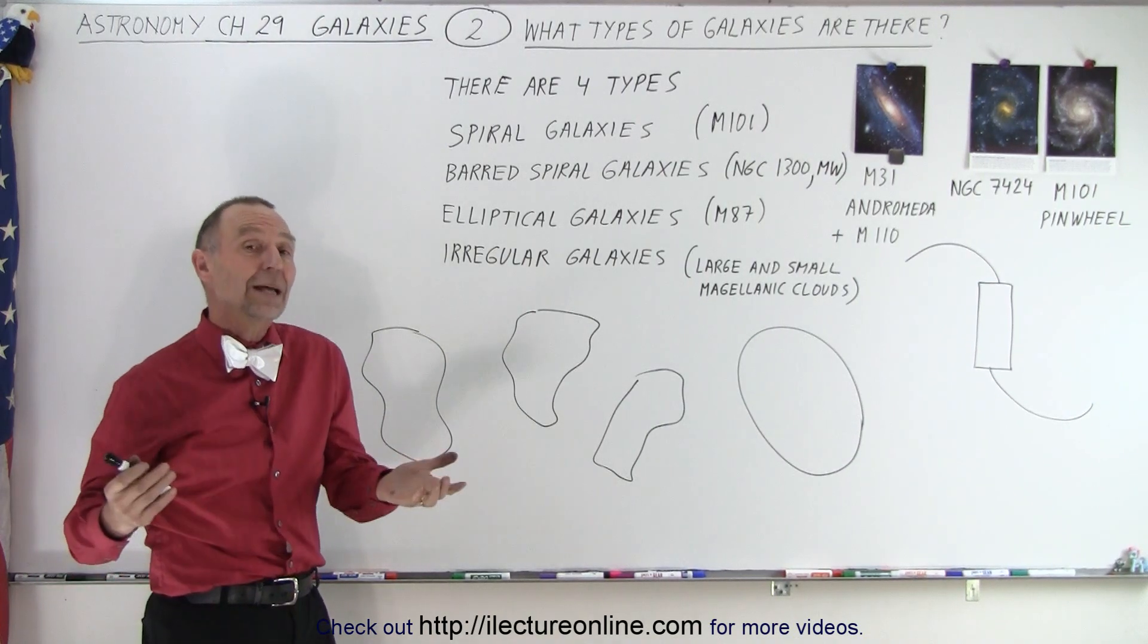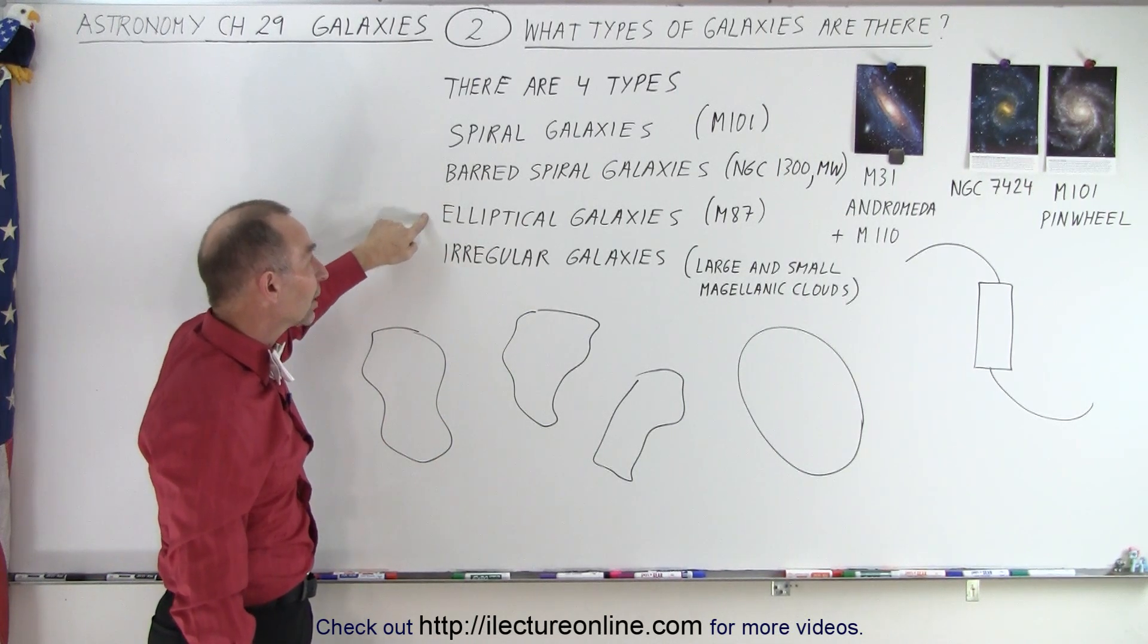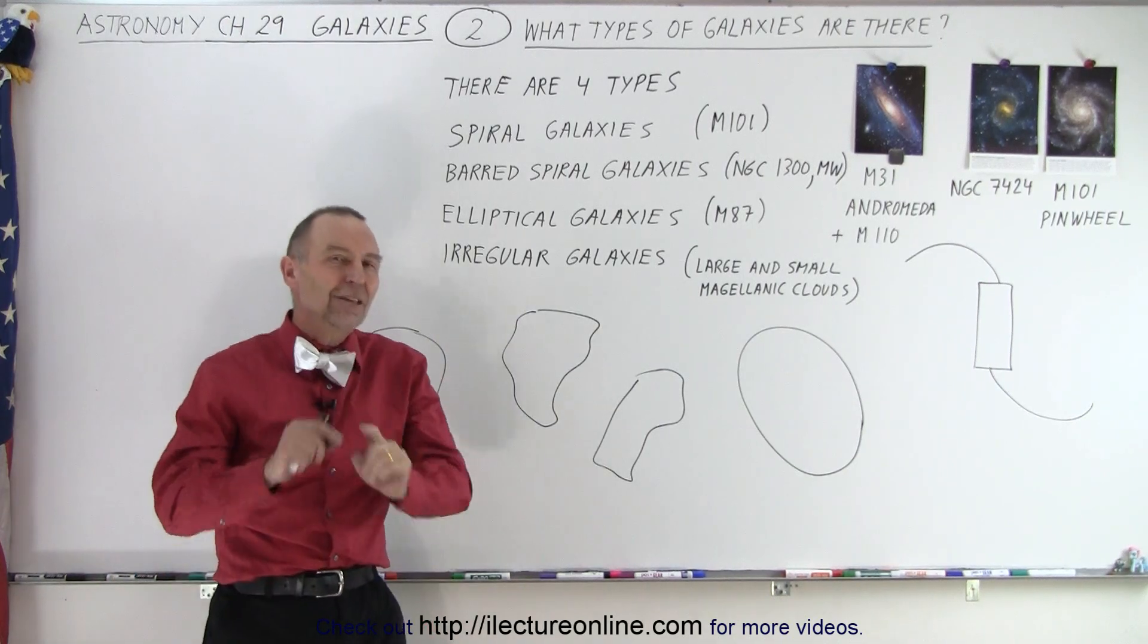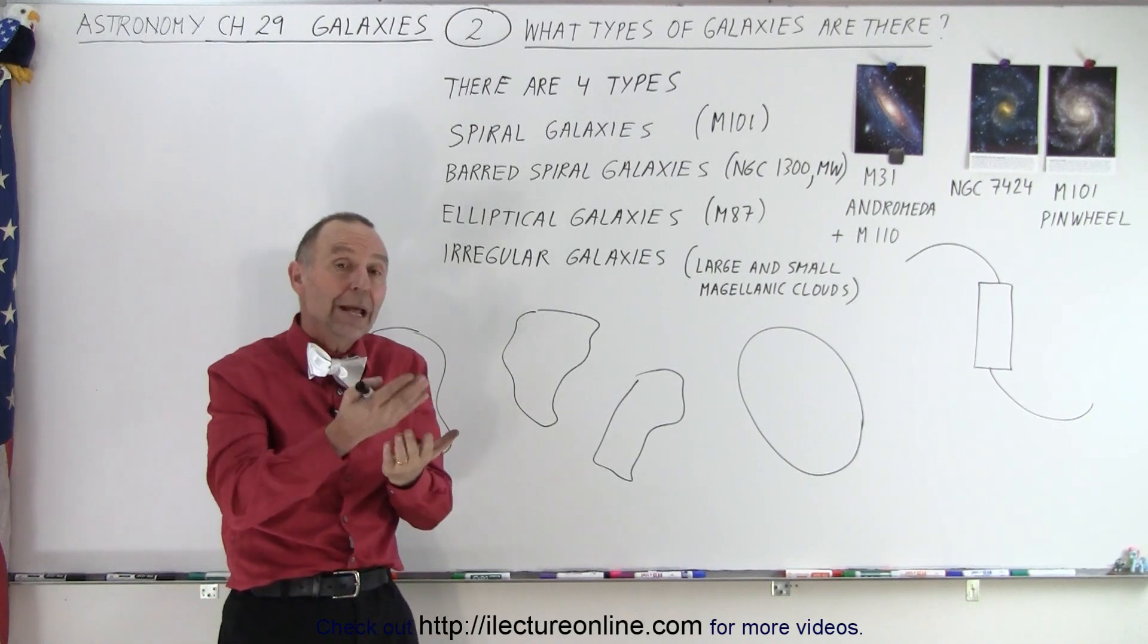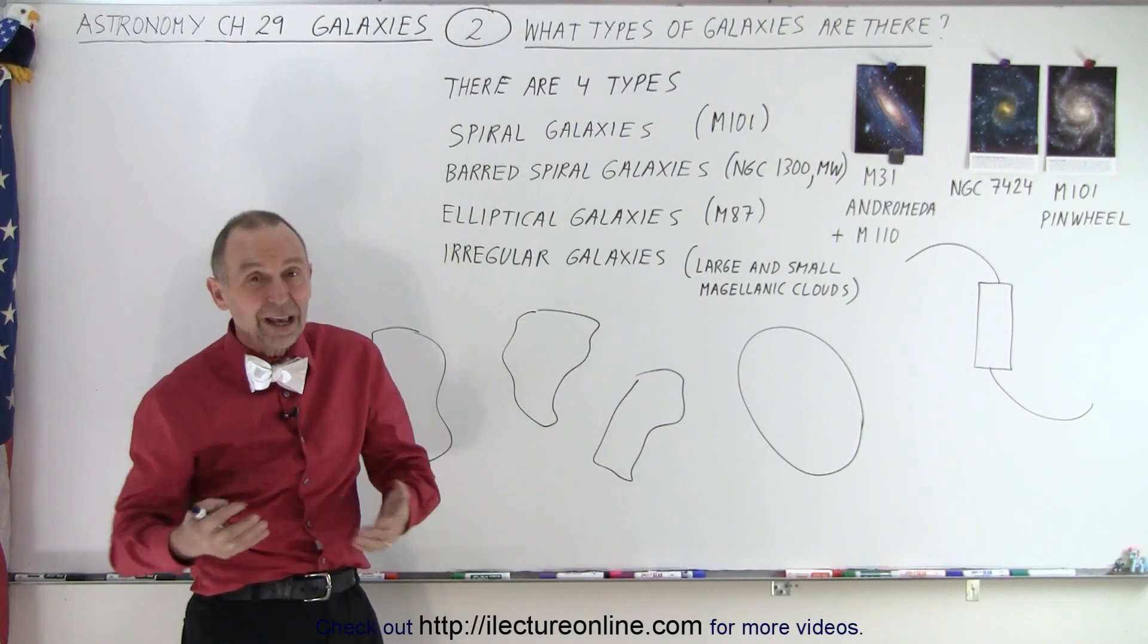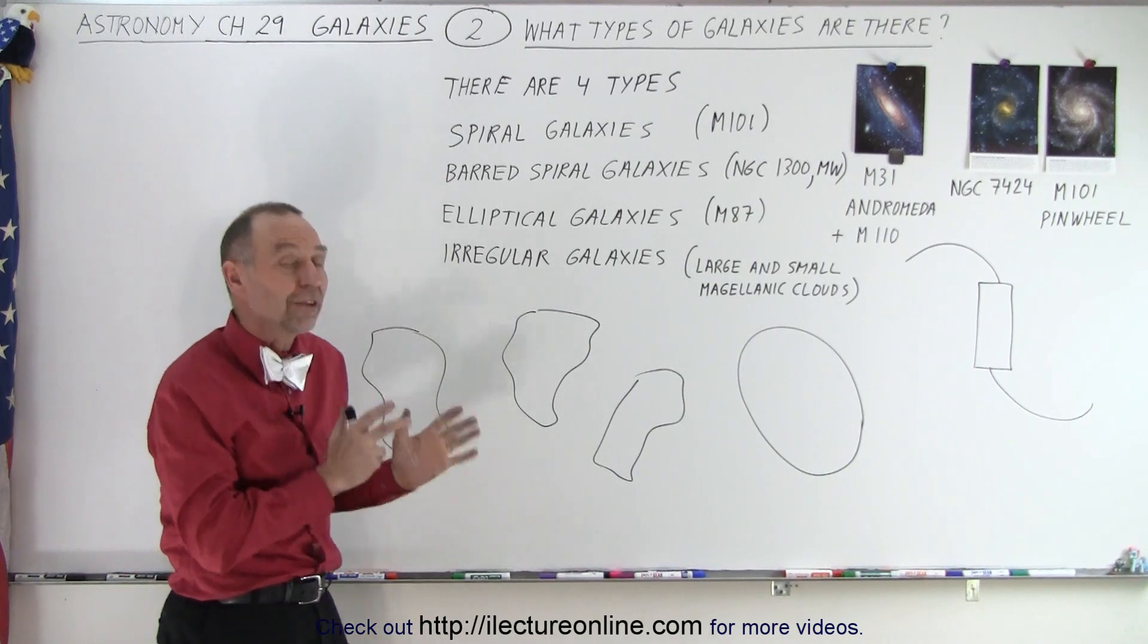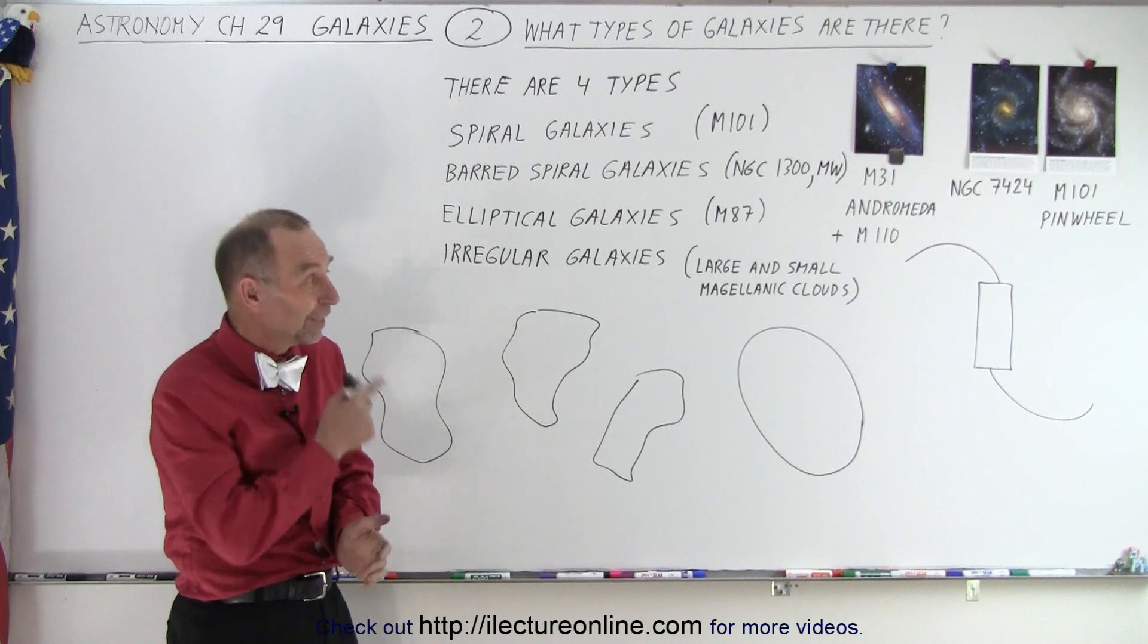So those are the four types. If someone asks you how many types are there, well, there's spiral galaxies, there's barred spiral galaxies, there are elliptical galaxies, and then there are irregular galaxies. And on the next video, what we're going to do is classify them and kind of compare one to the other for size, content, star formation, and things like that, so we can see what the differences are between the four different types of galaxies. And that is how it's done.